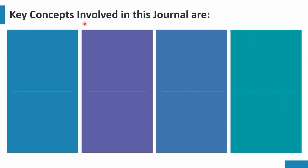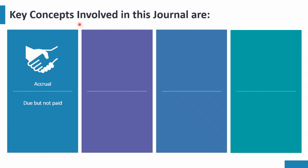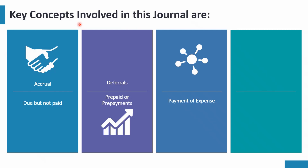Now let's talk about the key concepts involved in this journal entry. The first concept is the accrual concept — due but not paid items are known as accruals. The second concept is deferral — prepaid or prepayments, meaning we have paid for something but have not yet availed the benefit. The third concept is payment of expense — how we book the expense entry. The fourth concept is reversal of accrual journals.